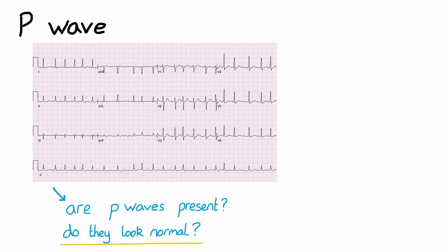This ECG shows a prolonged PR interval since it's over 0.2 seconds, or 5 small squares. Having a constantly prolonged PR interval is called first-degree heart block, which is caused by the AV node conducting electricity slower than normal.